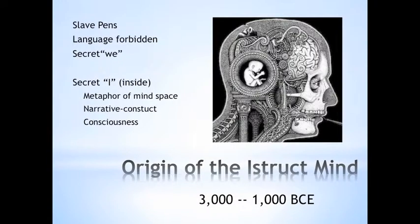War breaks out. The men are killed and the women and children are taken captive. In the slave pens, a new mind configuration evolves. Imagine those captives — ripped from their cultures, effectively ripped away from their gods, so that half of their mind is gone. To survive, they invent a metaphor of mind space and tell stories of a little eye hiding inside.